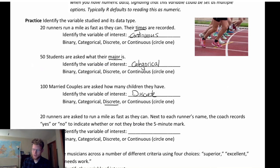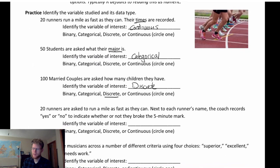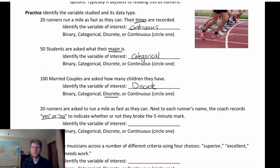Fourth: 20 runners are asked to run a mile as fast as they can. Next to each runner's name, the coach records yes or no to indicate whether they broke the five-minute mark. Even though running time is involved, the data actually collected and used is just the yes or no — so this is a binary variable with only two categories.